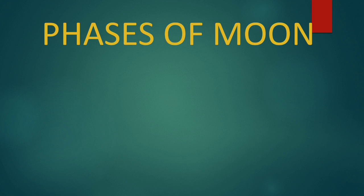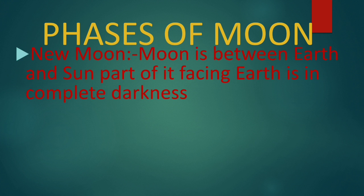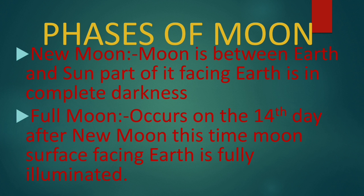Next we will discuss the phases of the moon. New moon is when the moon is between the earth and sun, so the part of it facing us is in complete darkness. Full moon occurs on the 14th day after the new moon, and at this time the moon's surface facing earth is fully illuminated. Other phases of the moon are known as crescent.